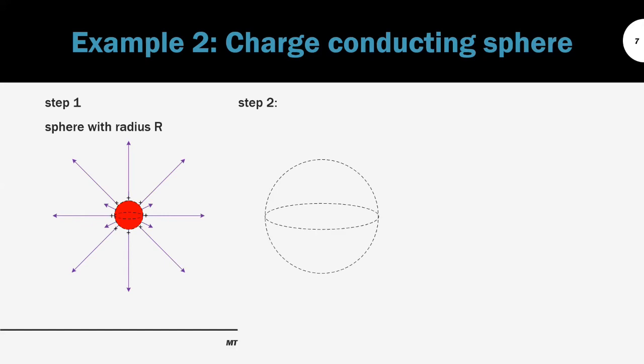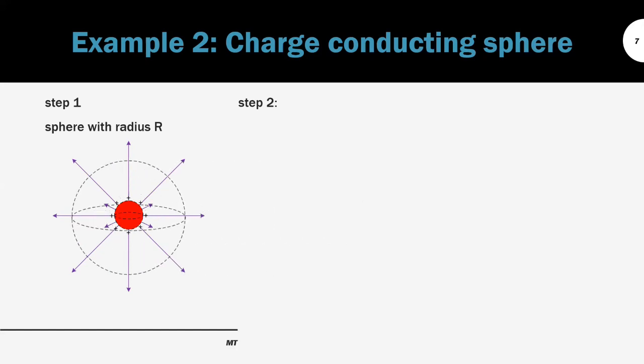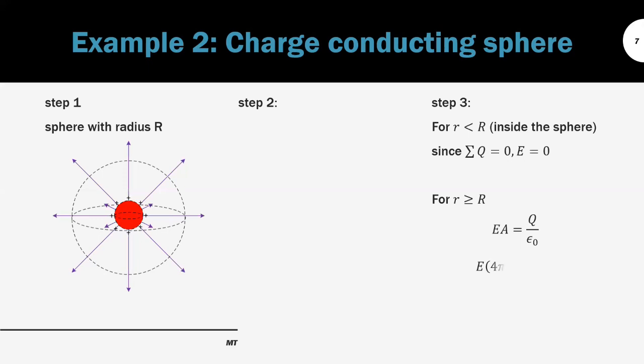We pick the sphere again for the Gaussian surface and apply the formula. For the conducting sphere, we separate the derivation into two cases. First, inside the sphere, where we have zero charge, so the electric field strength is equal to zero. For the outer surface, the derivation of E is the same as the point charge. So the electric field strength outside the sphere is Q divided by 4 pi epsilon r squared.